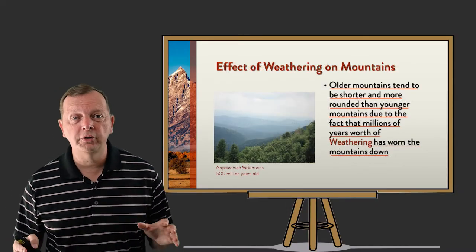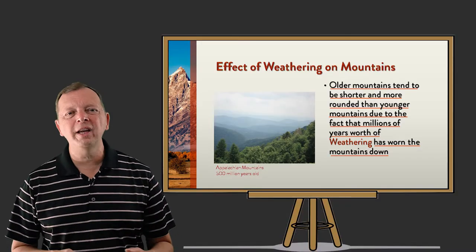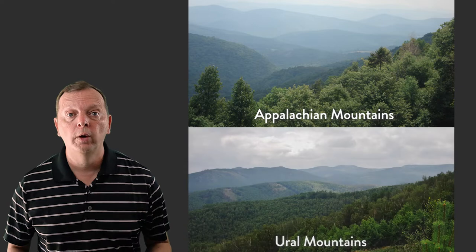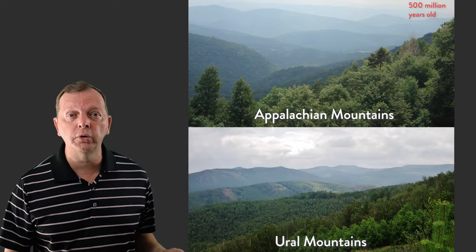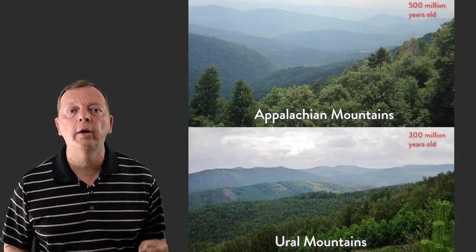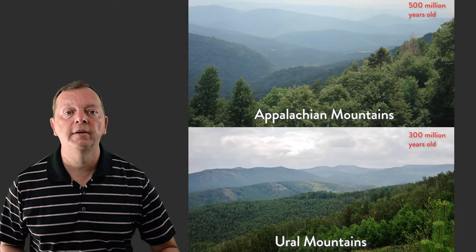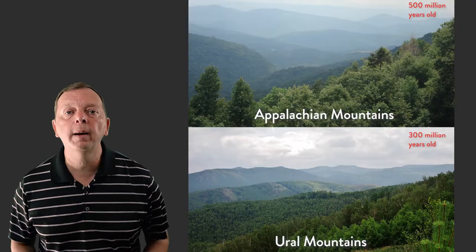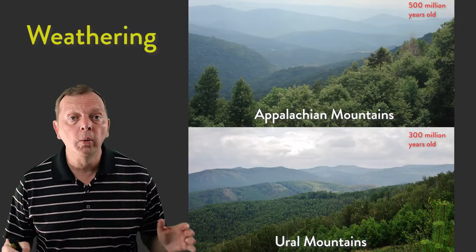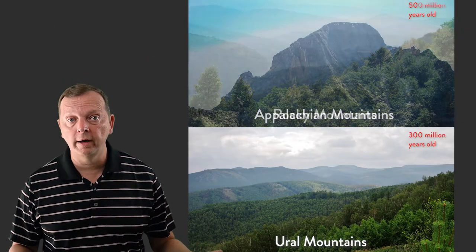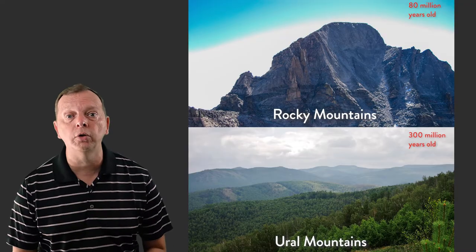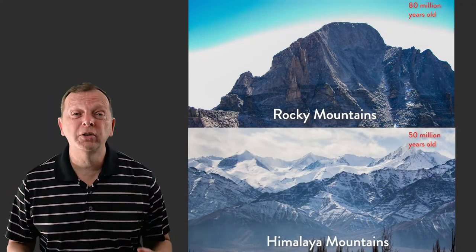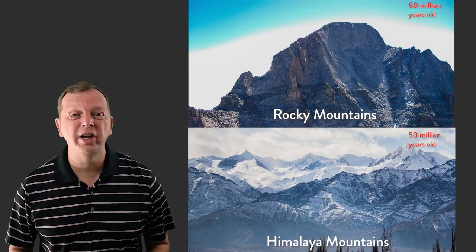Although most mountains will have steeper slopes, this really doesn't apply as much to older mountains such as the Appalachians in America or the Urals in Russia. The Appalachian Mountains are nearly half a billion years old and the Urals are nearly 300 million years. The effects of rain, wind, and ice have worn them down for millions of years in a process called weathering. So they are far more rounded than the Rocky Mountains, which is only about 80 million years old, or the Himalayas at only about 50 million years. These younger mountains appear much more angular and jagged.